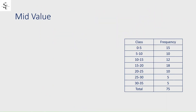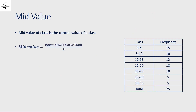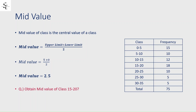Now let's move on to mid value. The mid value of a class is the central value of the class. The formula to obtain mid value is: mid value = (upper limit + lower limit) / 2. For class 0 to 5, the upper limit is 5 and the lower limit is 0, so the mid value = (5 + 0) / 2 = 2.5. Now obtain the mid value for class 15 to 20 and give your answer in the comments below.